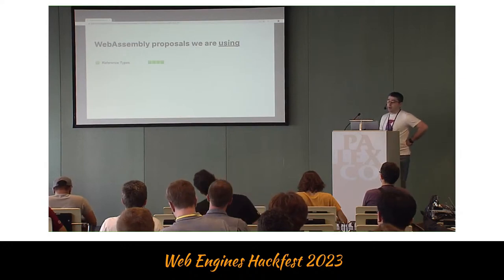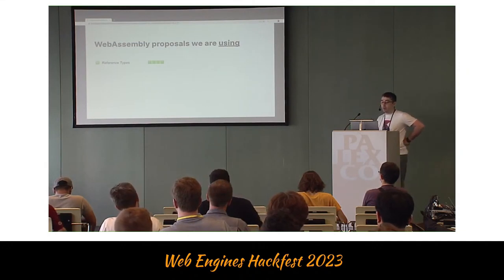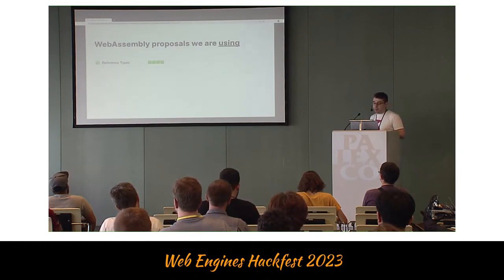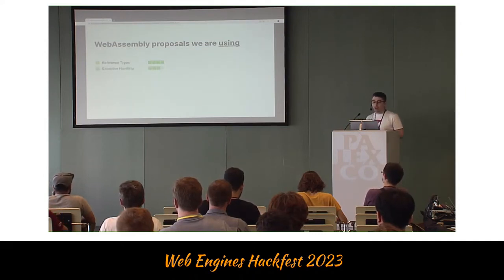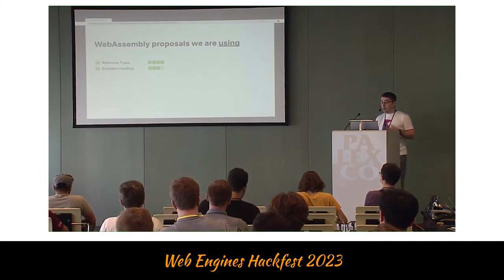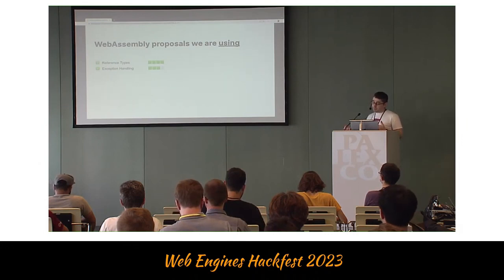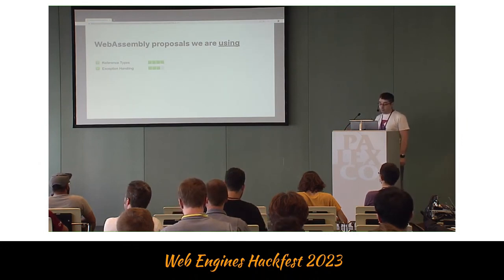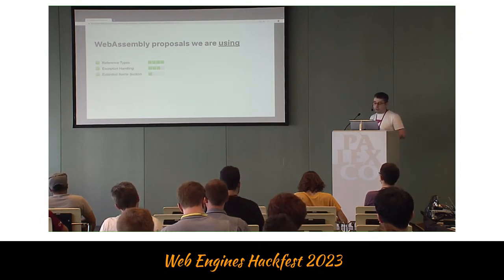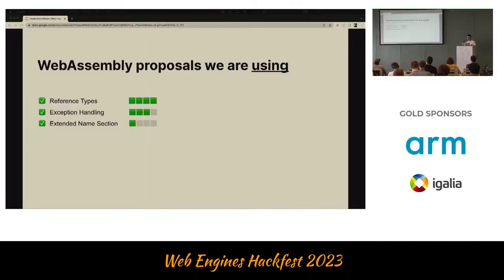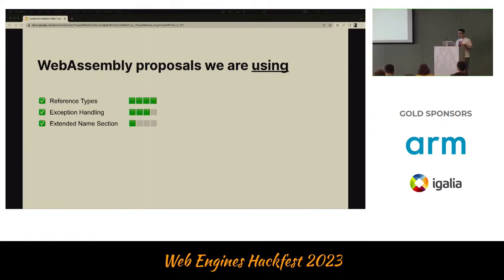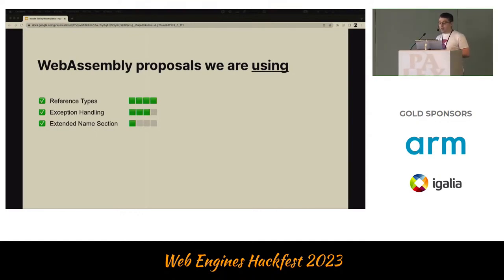Reference types introduces basic reference types and instructions to work with them. It's already part of the core specification and implemented by most VMs. Next is the exception handling proposal — it introduces something like exceptions and a way to throw and catch them. It's on phase three out of four, but it's already available by default in all browsers. Extended name section introduces a dedicated section for storing names for all entities in text representation — it's more like debug information and doesn't affect any semantics of WebAssembly.